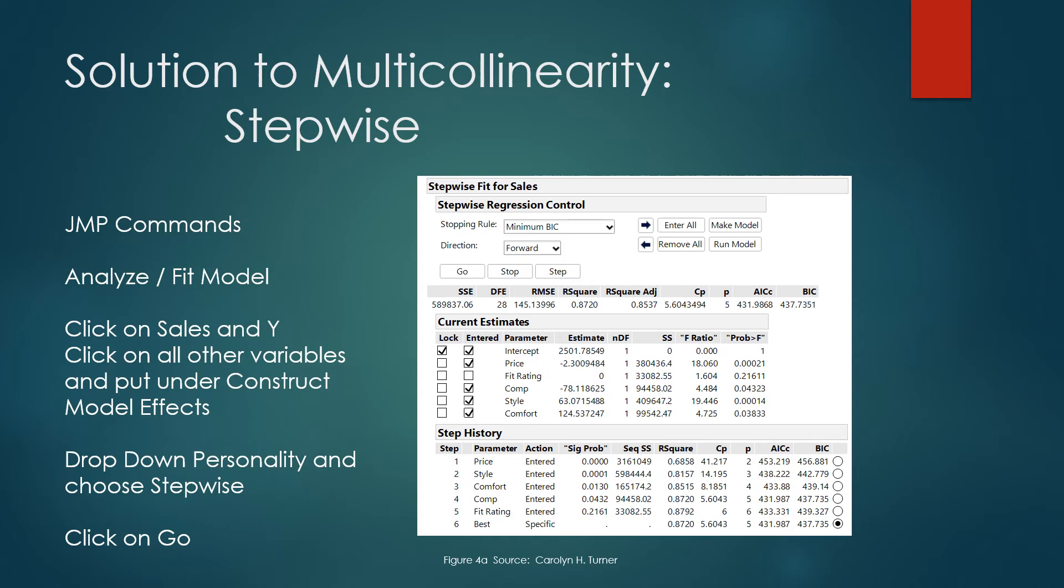Here's what we call the stepwise command or output. In order to get this output, I go through JMP. I say analyze fit model. Click on sales, drag it to the y box. Then all the other variables will go into the model effects as x's. Then I drop down the personality box and choose stepwise rather than regression. Then I have to click on this go button in order to make these check marks appear. If a variable is checked, then it's going to be included in the model and be a good predictor. The y-intercept is not a variable, but it is still part of our equation.